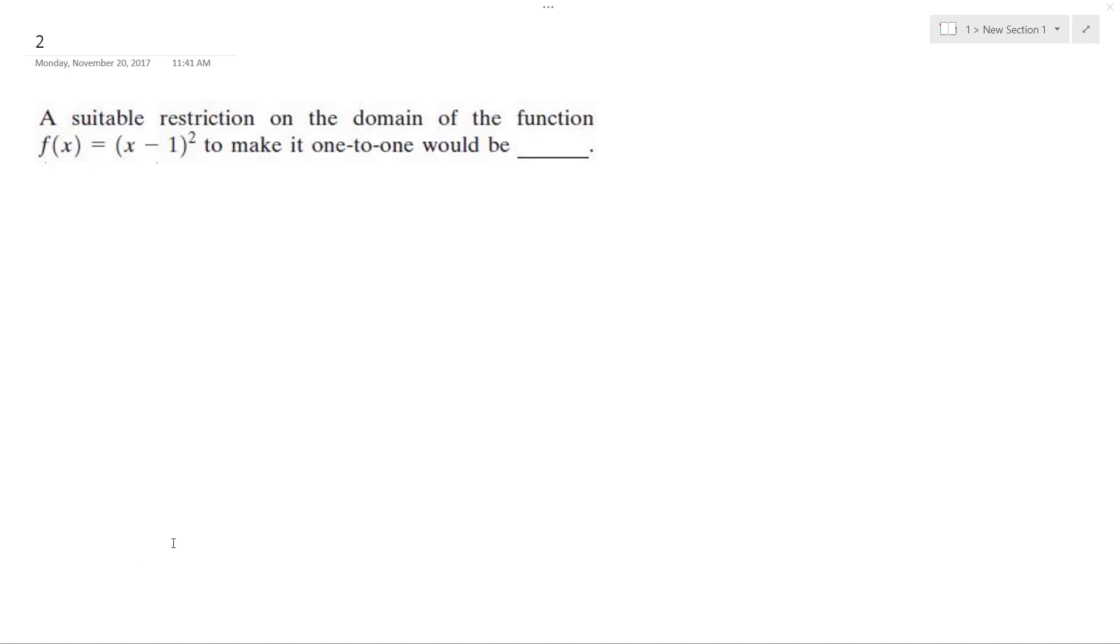So you want to find a suitable restriction on the domain of the function f(x) = (x - 1)² to make it one-to-one.